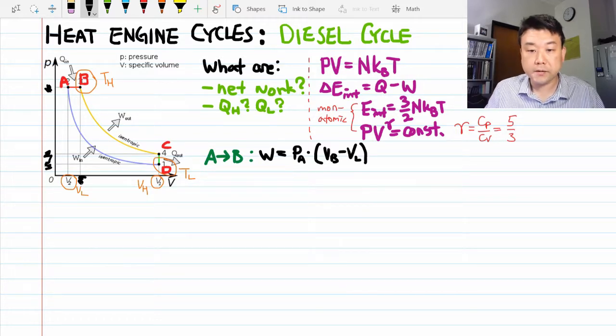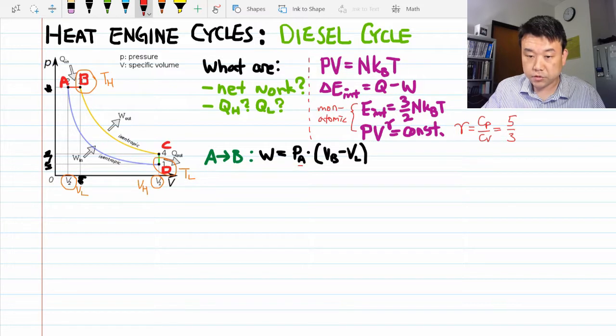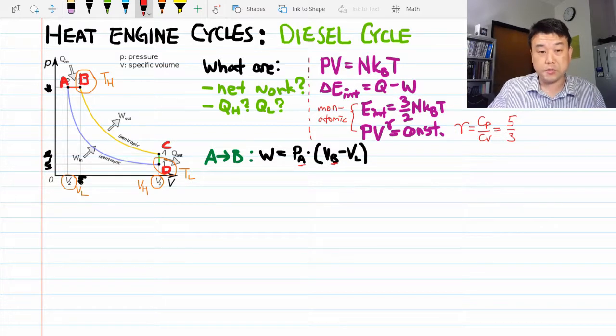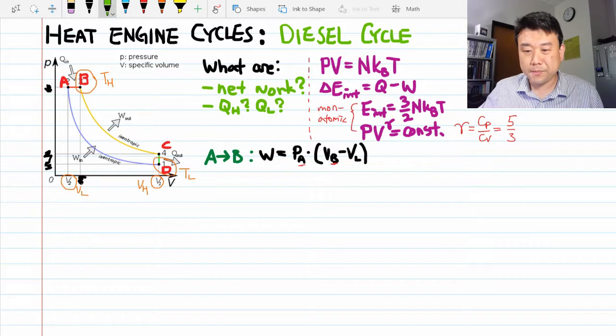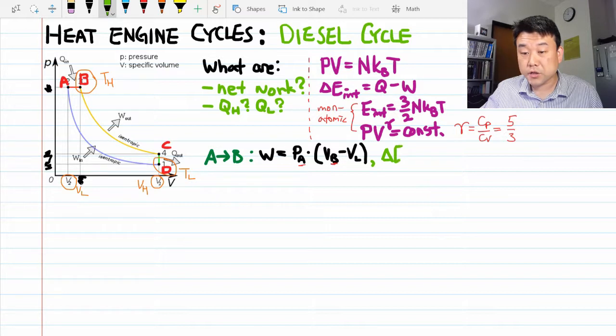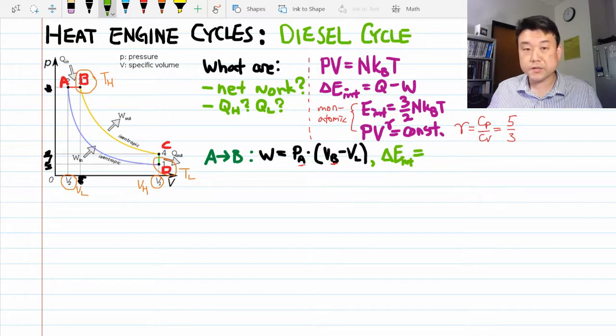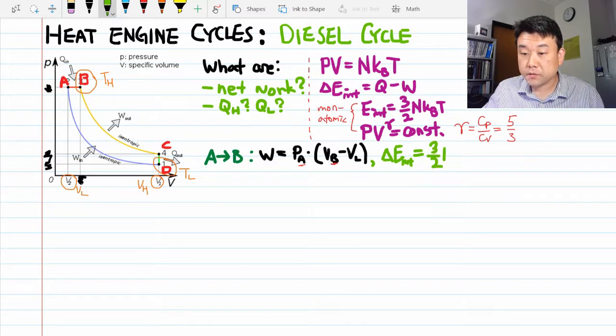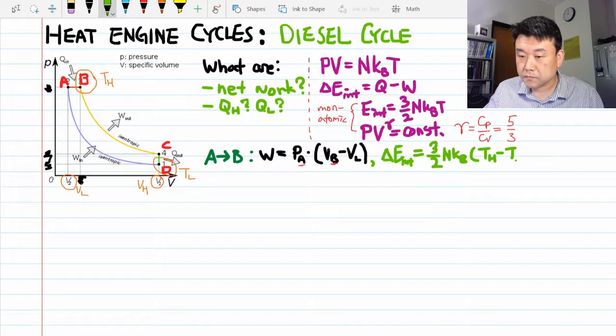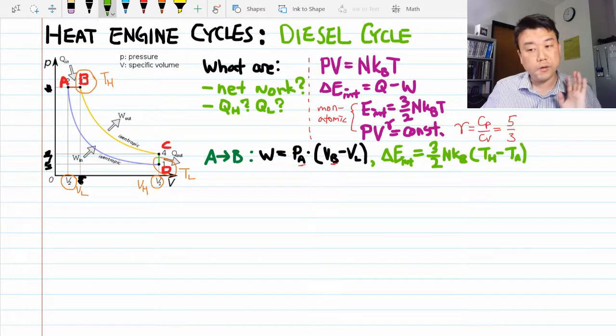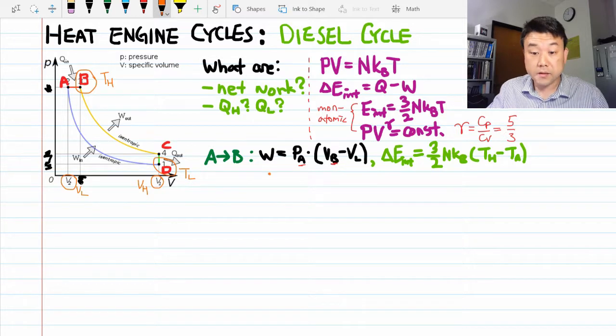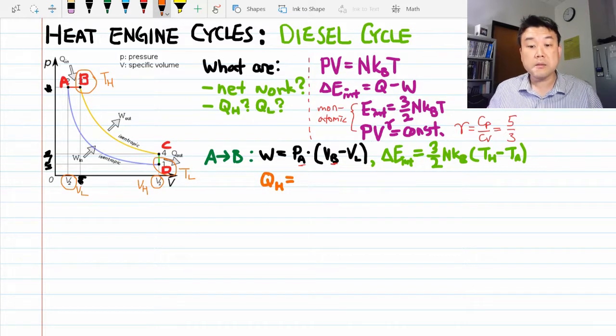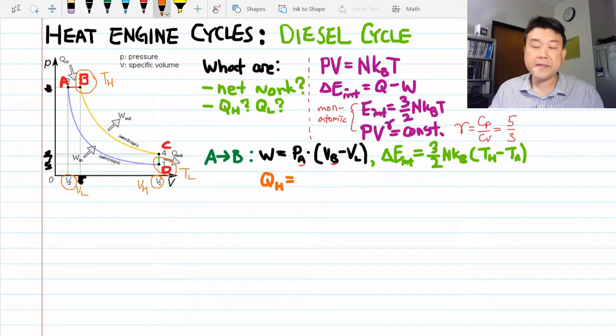And as before with the Otto cycle, I'm using the subscripts to indicate the quantities associated with a point with a goal of replacing those eventually in terms of known quantities. I hope you remember isobaric expansion being complicated. There's non-zero work done and there's non-zero change in internal energy because there's a change in temperature. This is the familiar expression from the previous examples. And temperature at A is known. We'll figure that out later. And finally, we use first law to express the heat input, which is going to be changing internal energy plus the work done by gas. So let me just write that out.